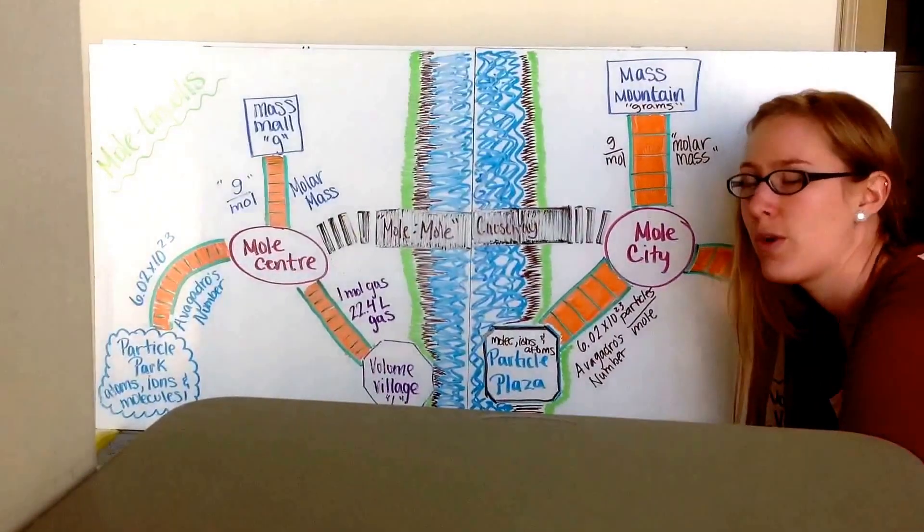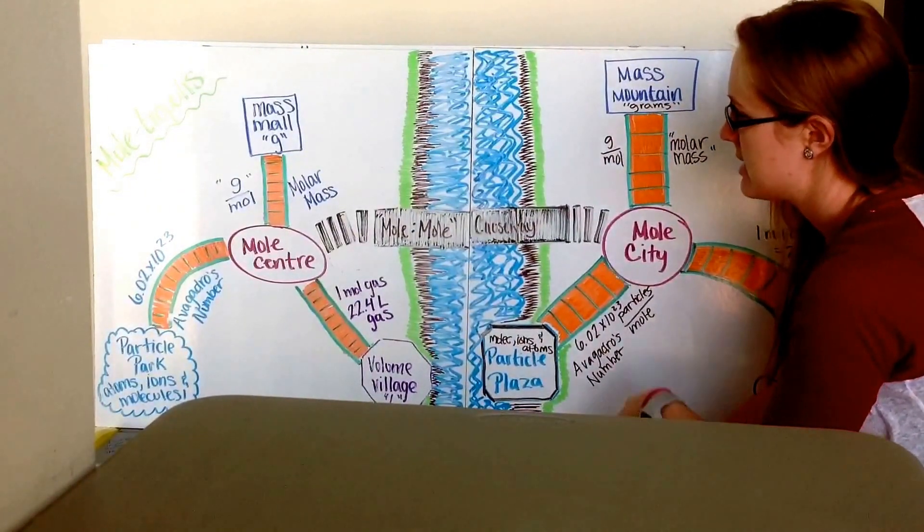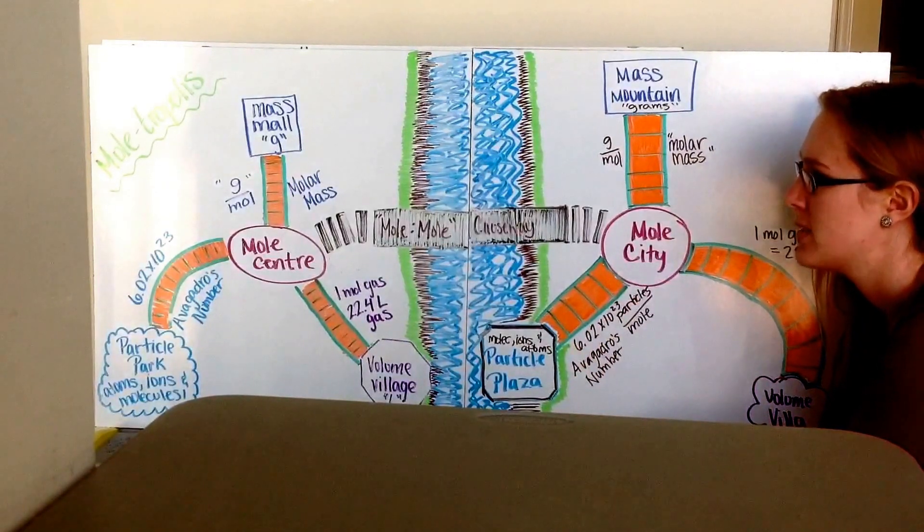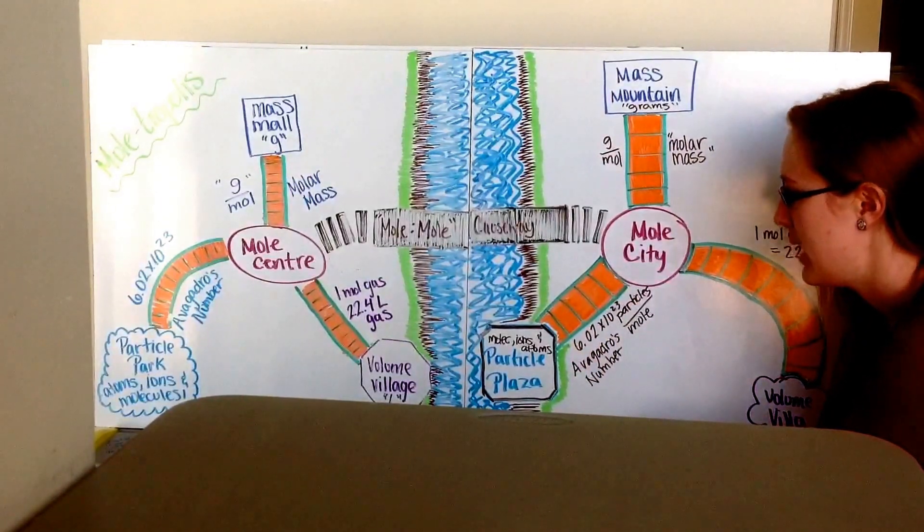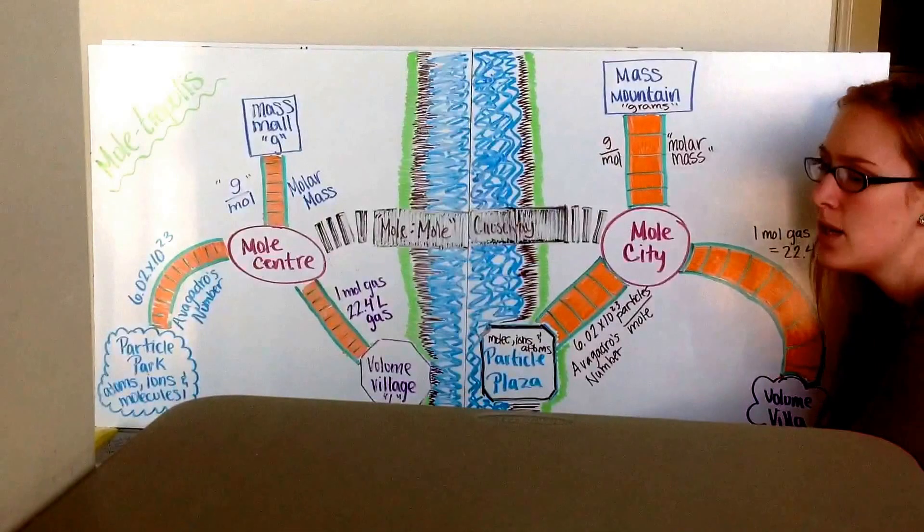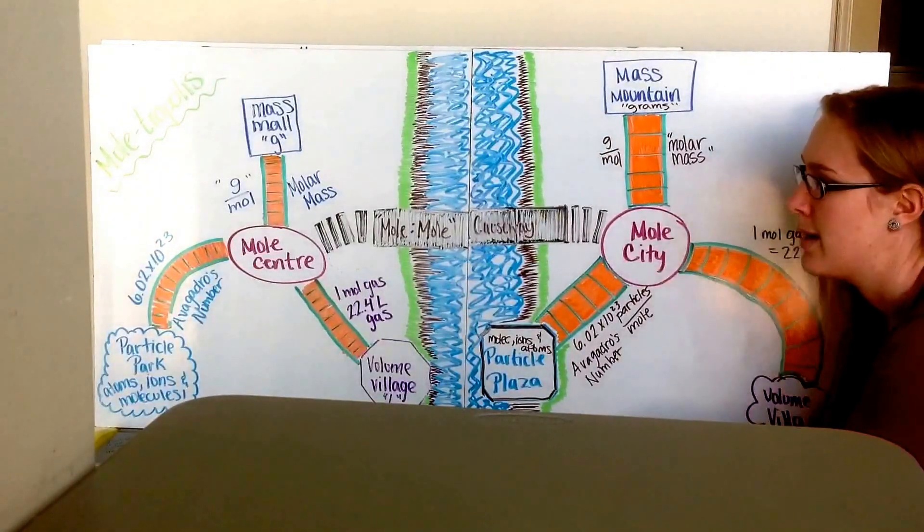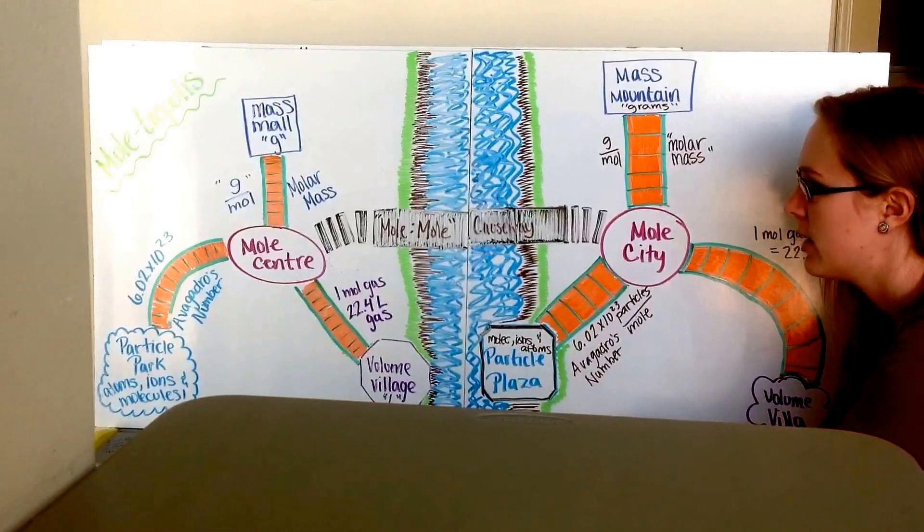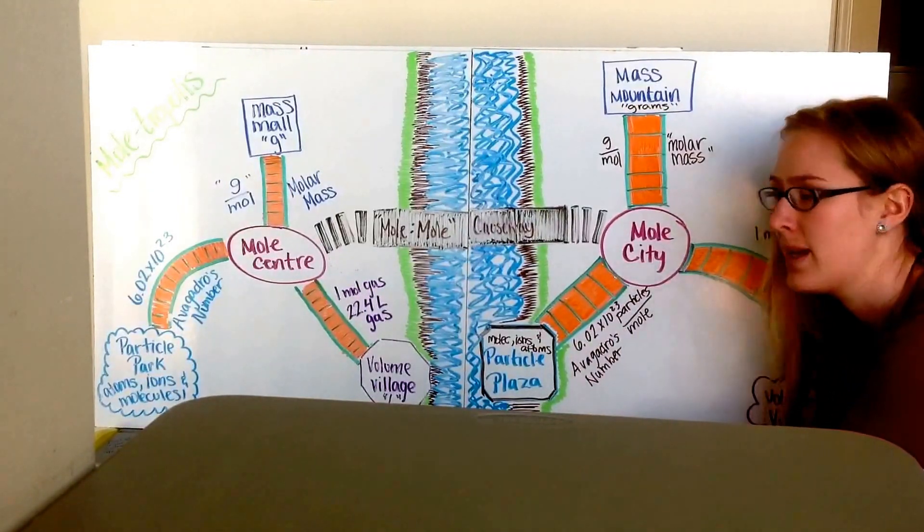So you're going to sketch this on the front page of your packet. And you're going to use this. We're going to use this to map out our different steps on how to get from one place to the next. So this is something you want to reference. It doesn't have to be in color like mine, but it needs to look legible so you can follow it like it was a map.